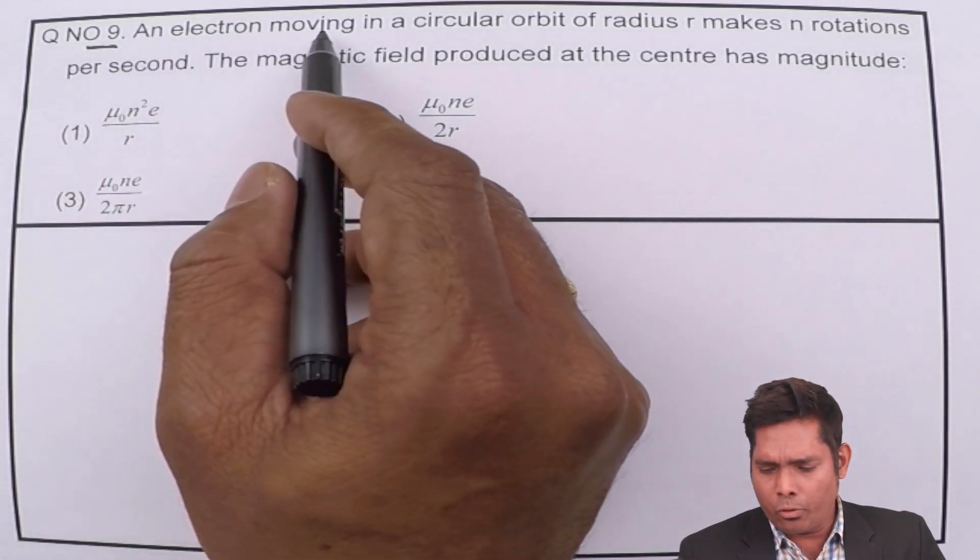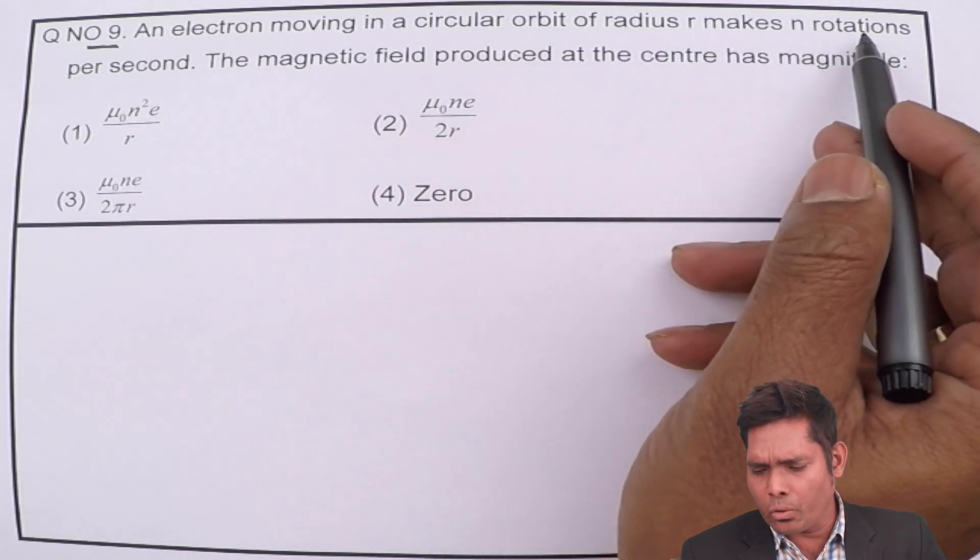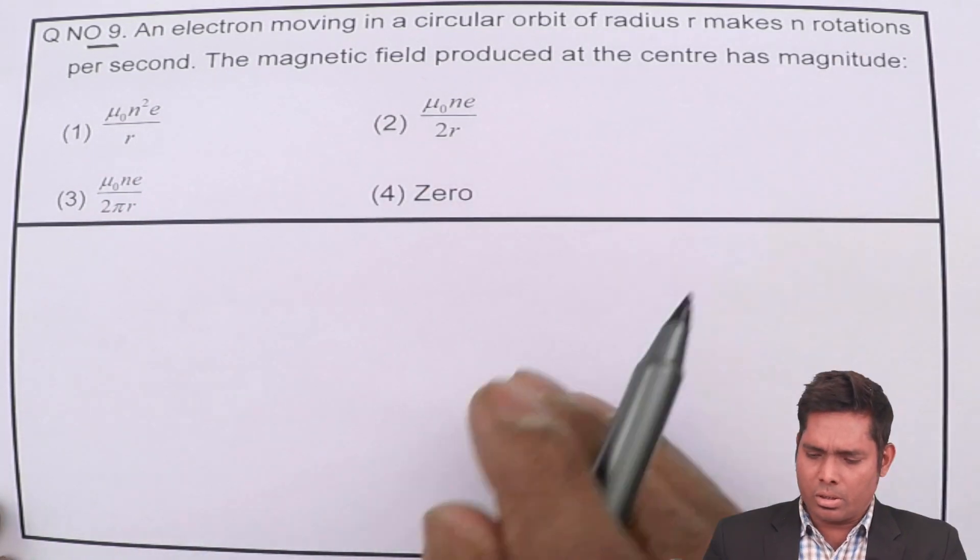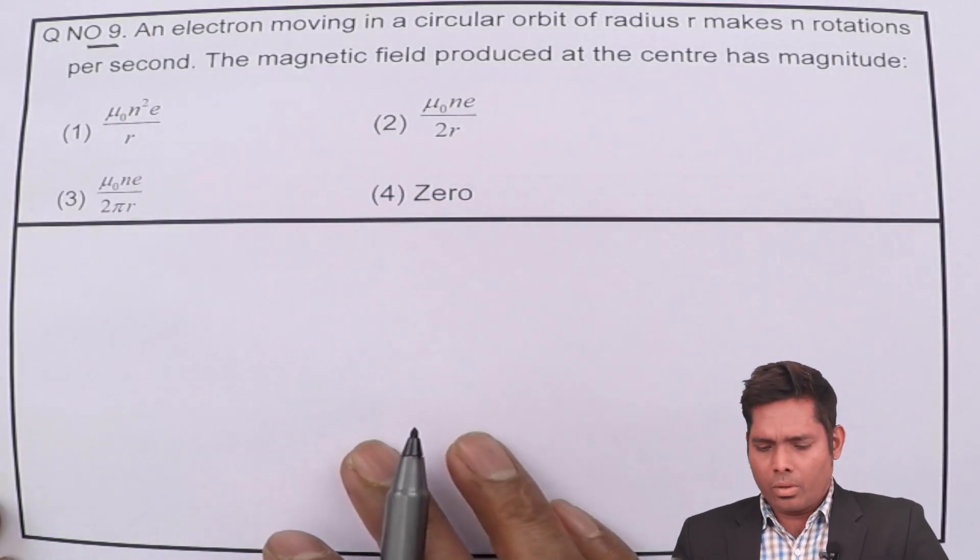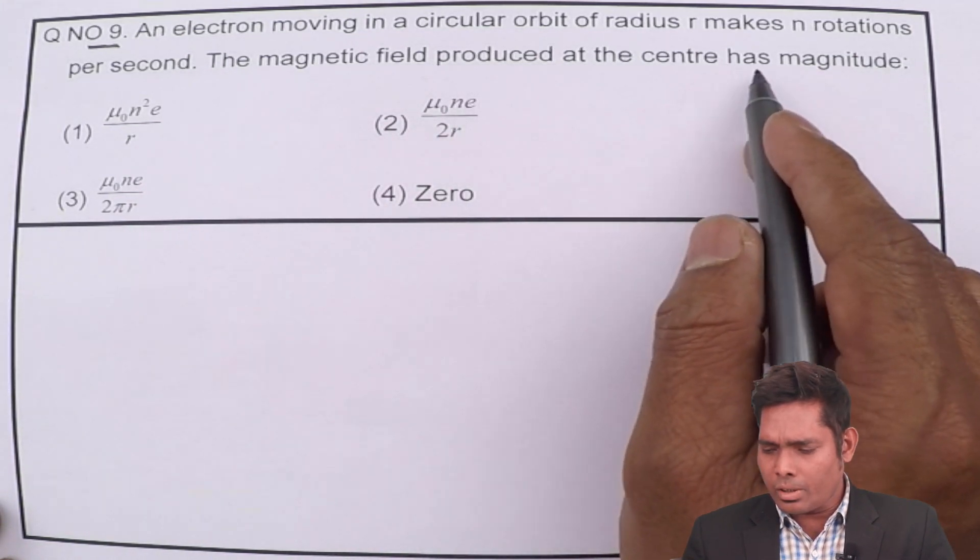An electron moving in a circular orbit of radius R makes n rotations per second. The magnetic field produced at the centre has magnitude.